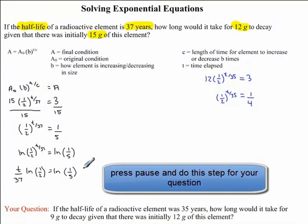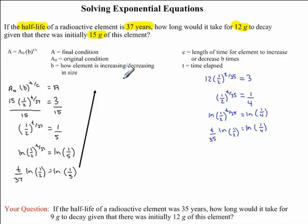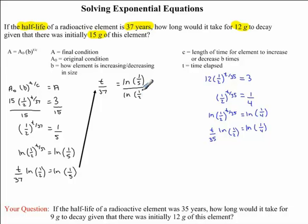I would now like you to try doing these two steps in the question you are given. Coming back to our question, we still want to isolate for t, so we divide both sides by ln(1/2). This gets rid of the ln(1/2) on the left side, leaving us with t/37 = ln(1/5) / ln(1/2).